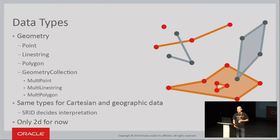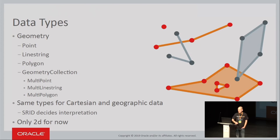We have support for all the basic geometries: Point, LineString, Polygon, and collections of these. Unlike some other open source spatial database systems, we use the same types for Cartesian and geographic data — that's what the standard says. The SRID decides if it's geographic or Cartesian based on the definition of the spatial reference system. For now it's only 2D. Our users are asking for 3D — not 3D computations, but to be able to store and retrieve the third coordinate. That would be the first milestone for 3D, but we have higher priority items first.